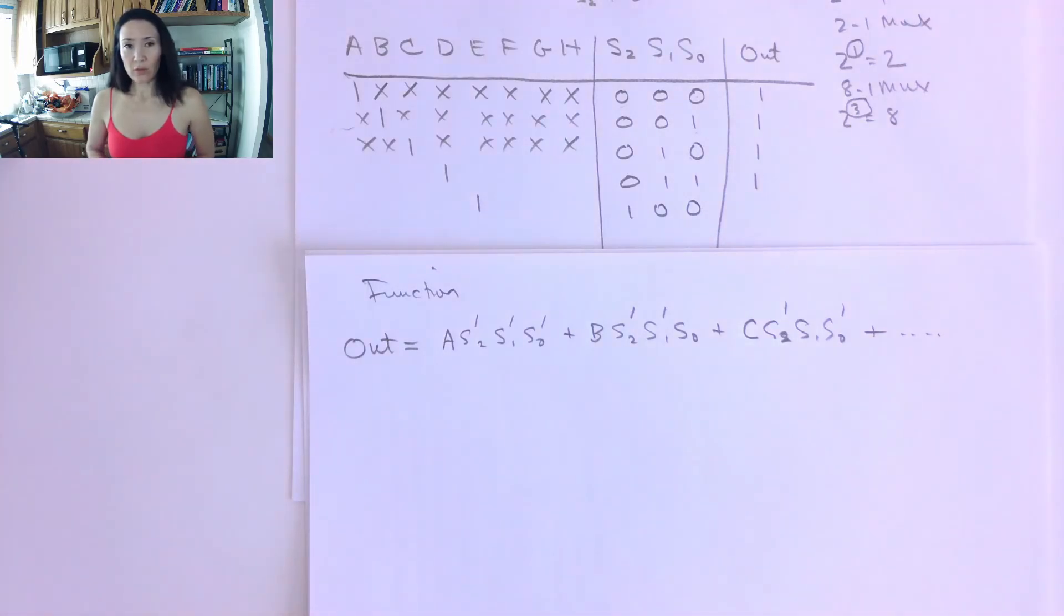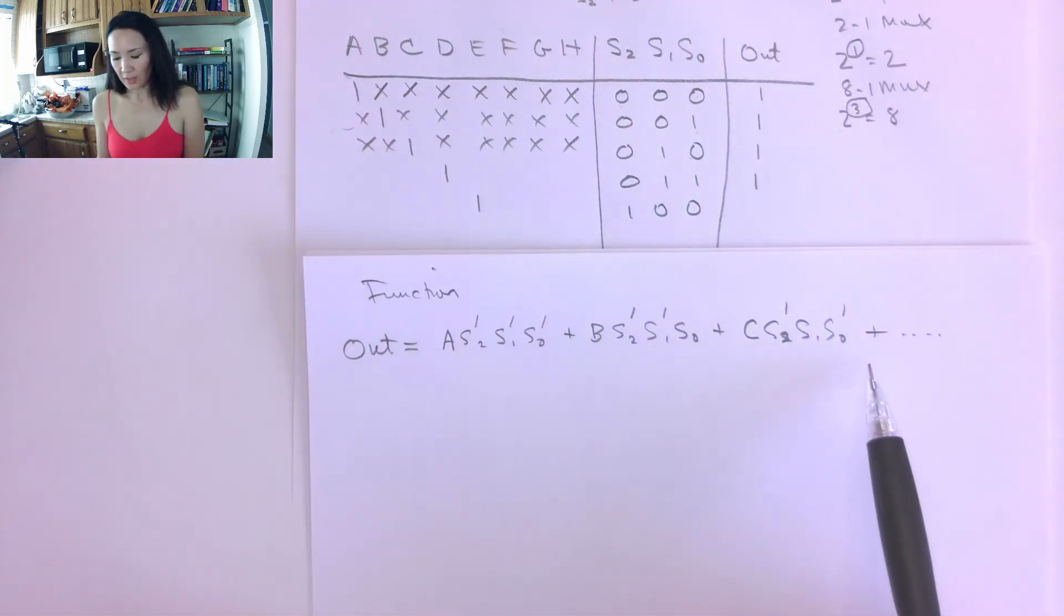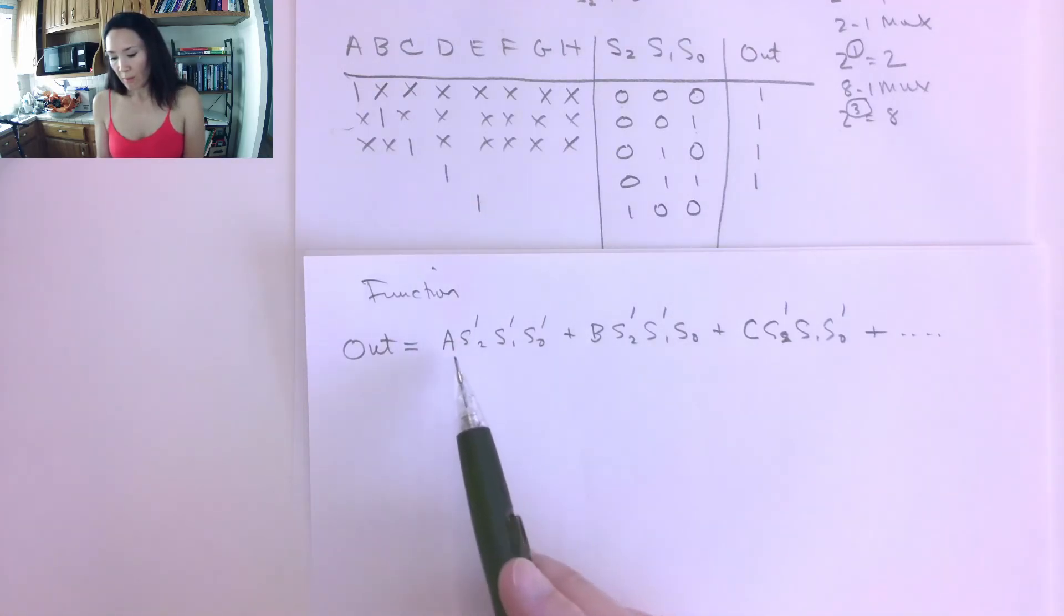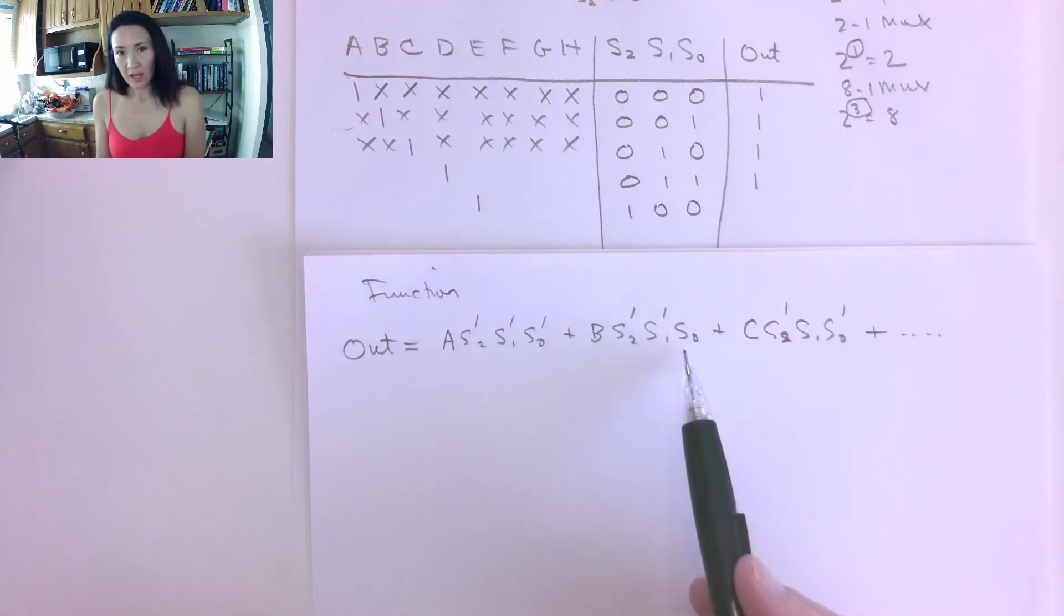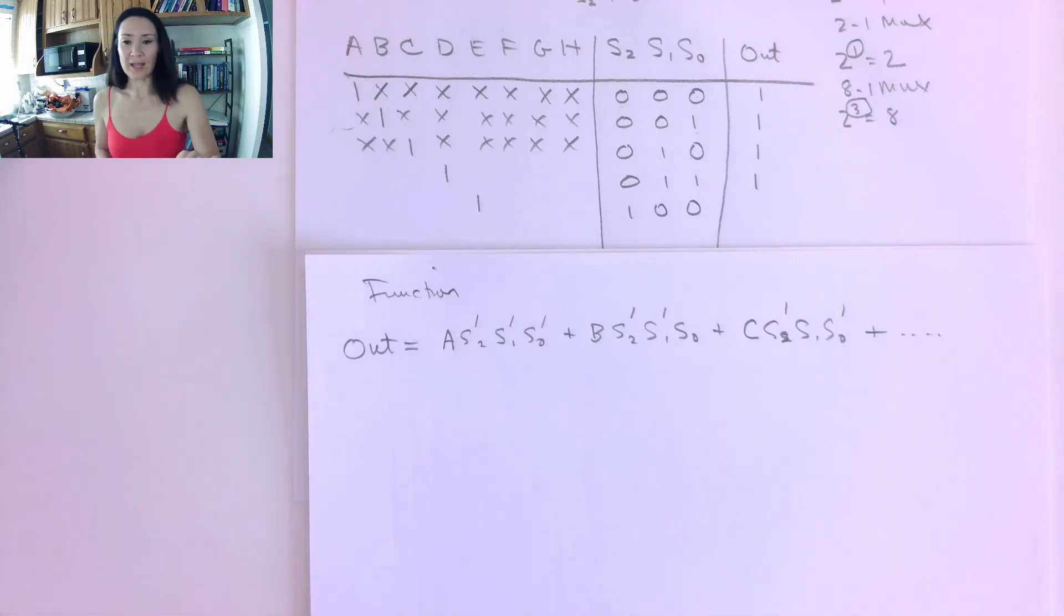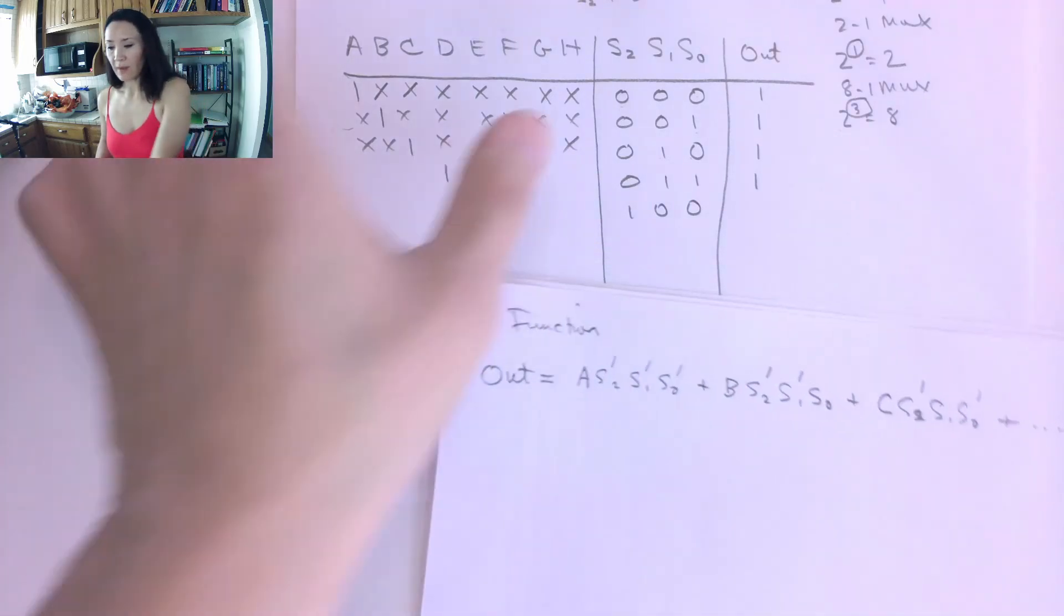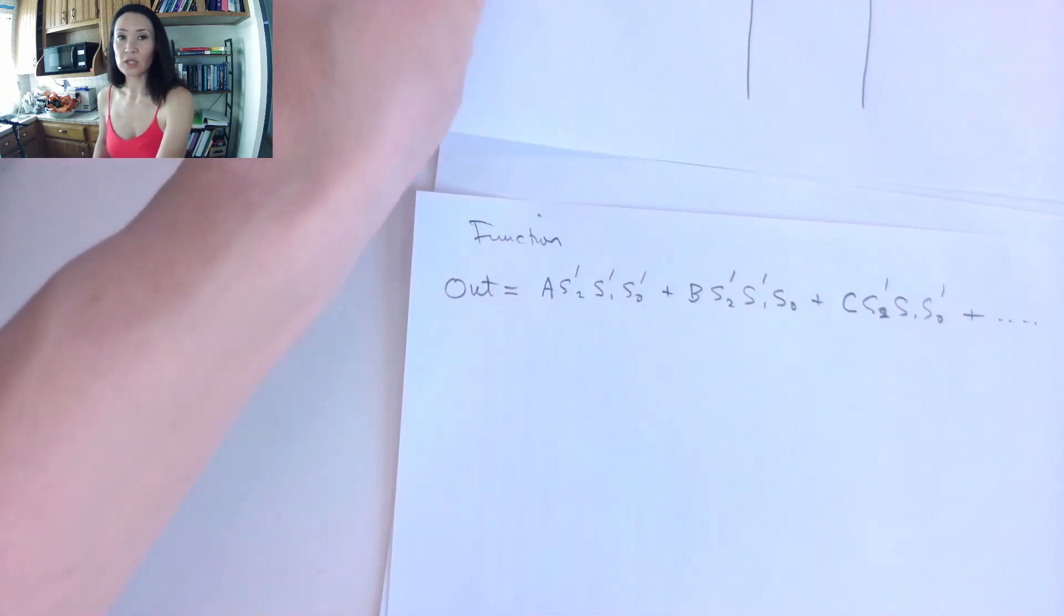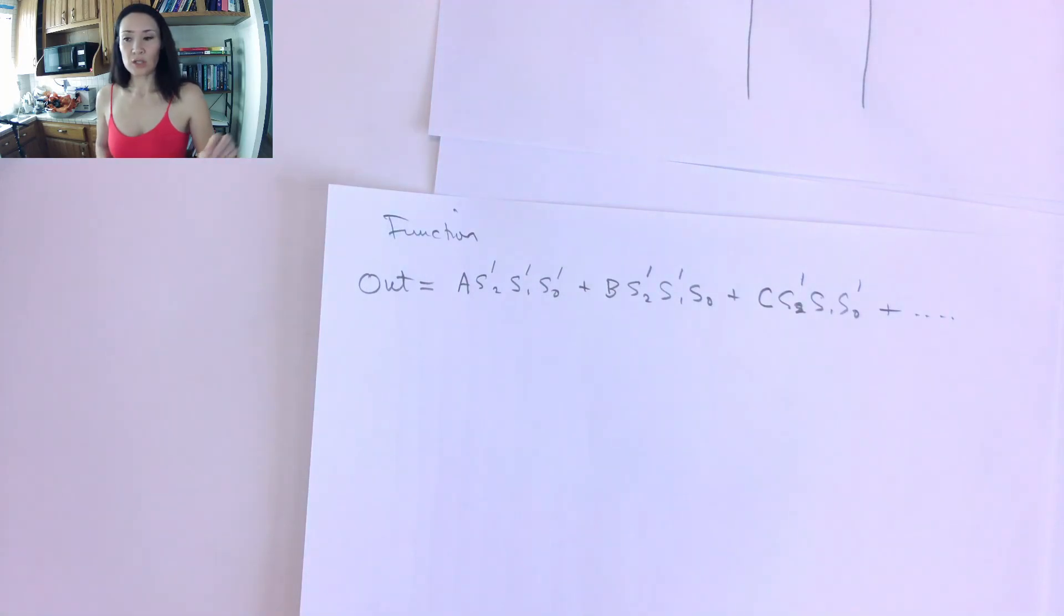And just like we did with the 4-to-1 multiplexer, you can make the digital logic circuit for this that implements the 8-to-1 multiplexer by basically ANDing all of these product terms together and then putting all the output of those ANDs into a big 8 input OR gate. So let me know if you have questions about the 8-to-1 multiplexer, and the next video I'm going to show you is how we actually use these multiplexers to implement other functions.